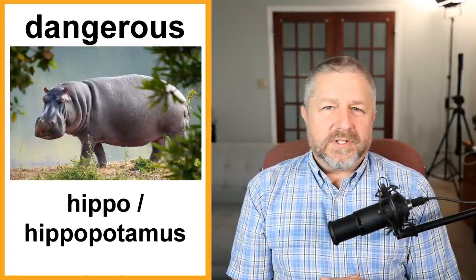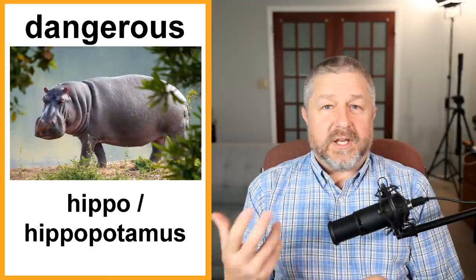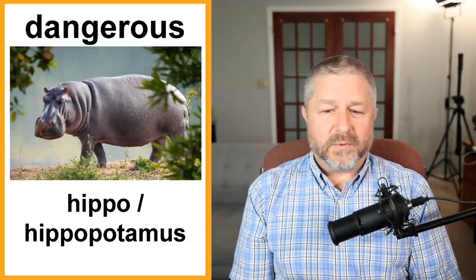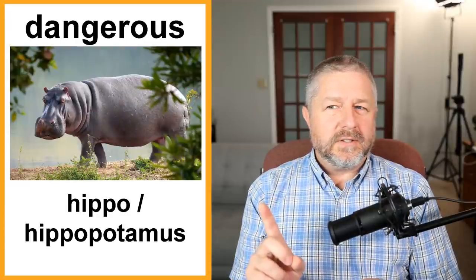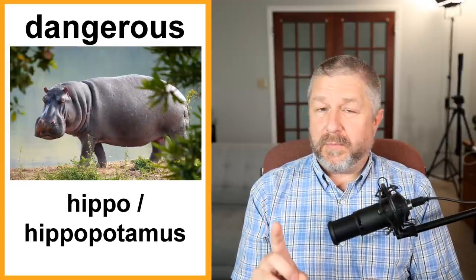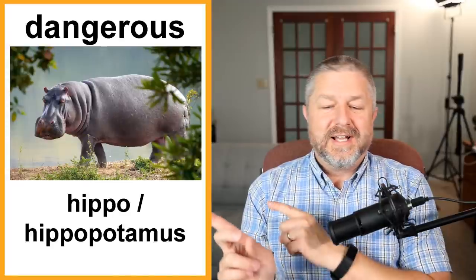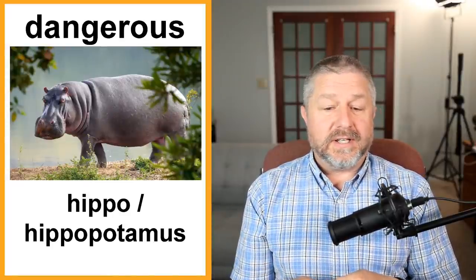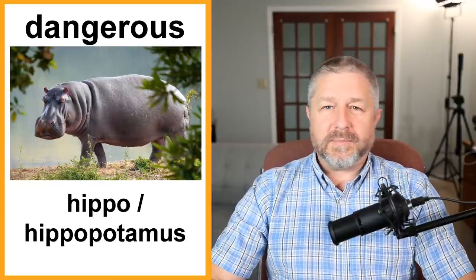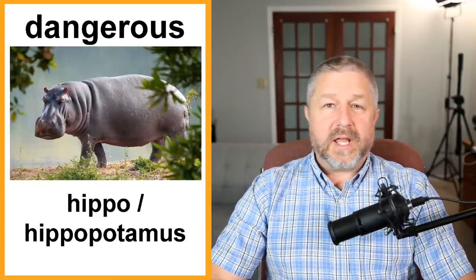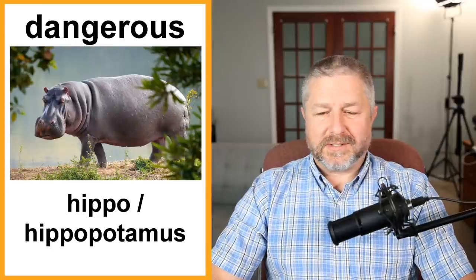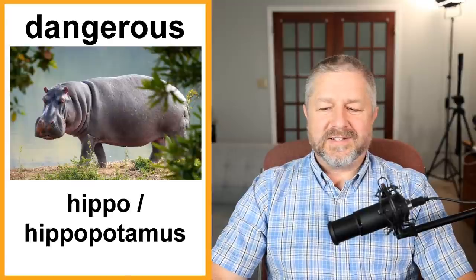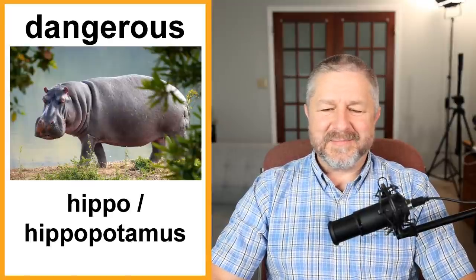Dangerous. When an animal is dangerous, you have to be careful when you are around it. One animal that might appear safe but is actually quite dangerous is the hippopotamus — considered a very dangerous animal. We say either hippo or hippopotamus. Maybe try saying hippopotamus a few times — it's a little tricky to pronounce.